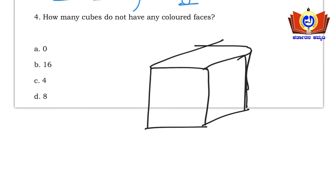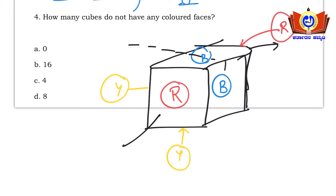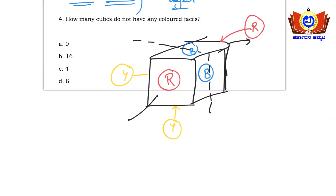I'll draw the diagram. The cube has red on two opposite faces, blue on two adjacent faces, and yellow on the remaining two faces. It is cut into two halves along the plane parallel to the red faces — meaning the cut goes between the two red faces.